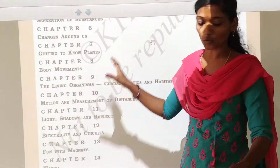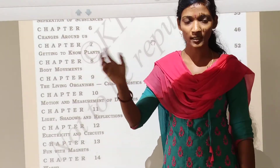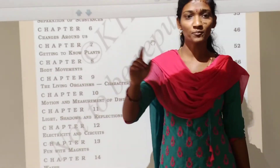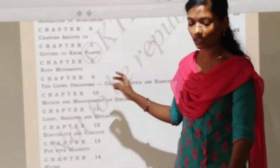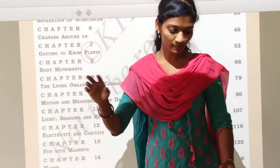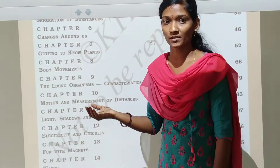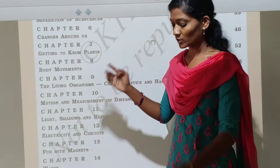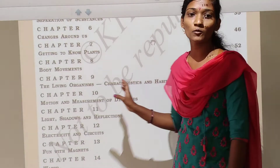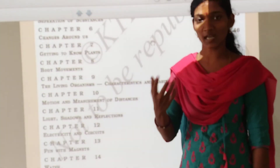Total sixteen chapters are in our science syllabus. Here, total in physics chapters are four, chemistry is five, biology is seven. This is all about our science syllabus. Continue your next class. Thank you.